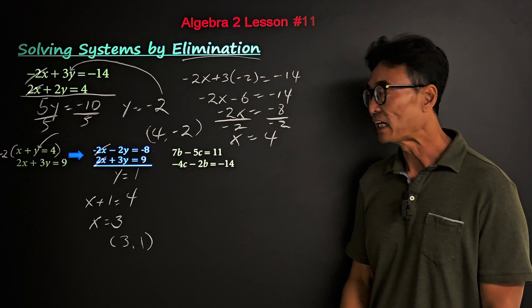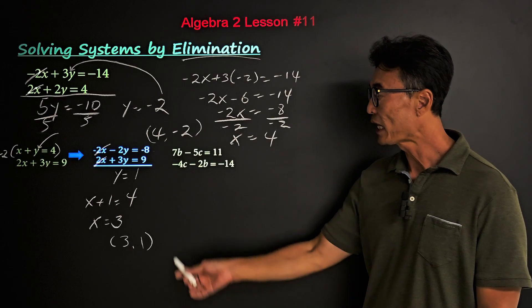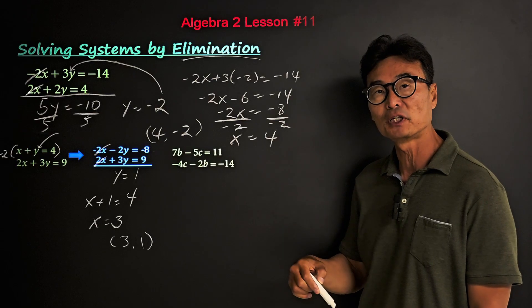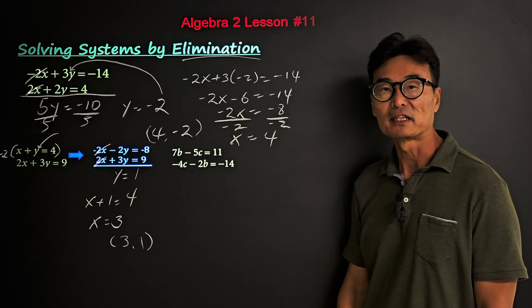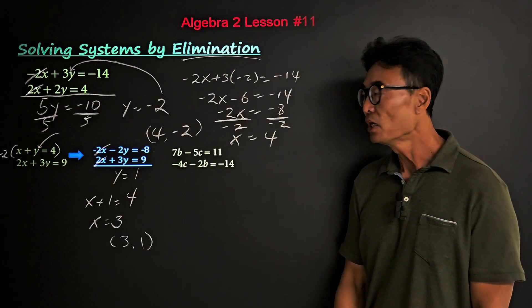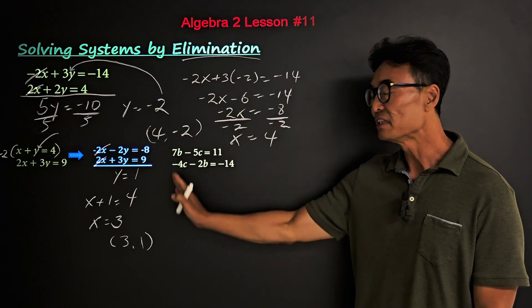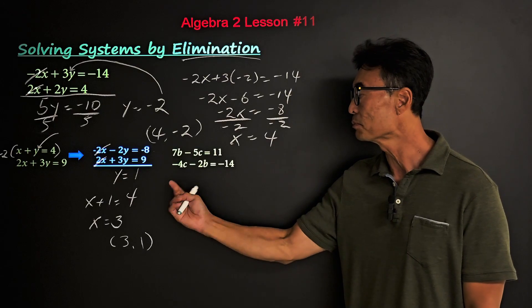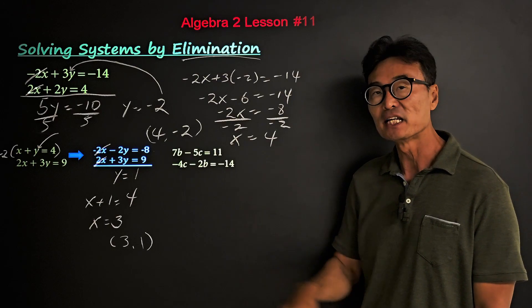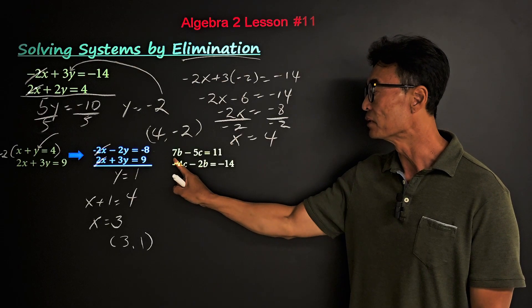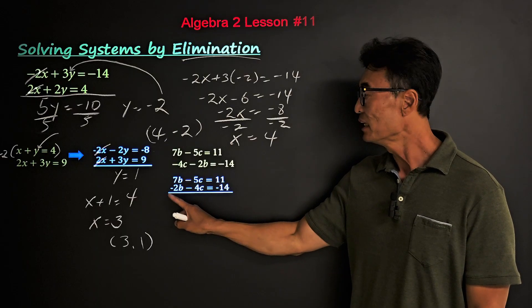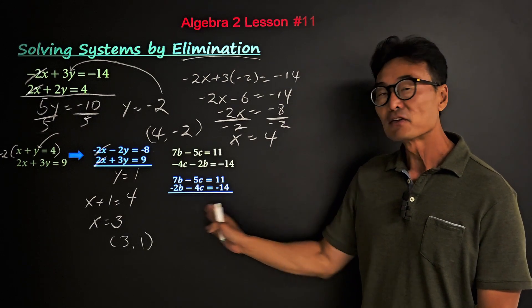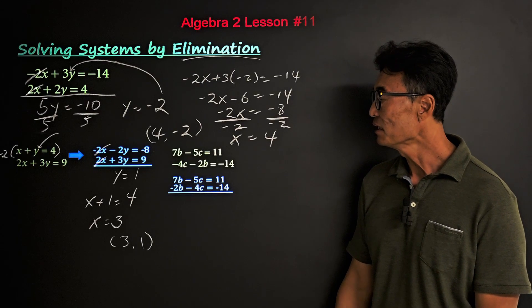In this problem, notice we have 7b in the front but c comes before b in the second equation. To use the elimination method correctly, we need to line up like variables — b under b and c under c. So we swap the positions of negative 4c and negative 2b, placing negative 2b under 7b and negative 4c under negative 5c.